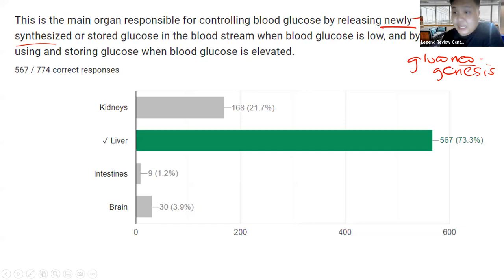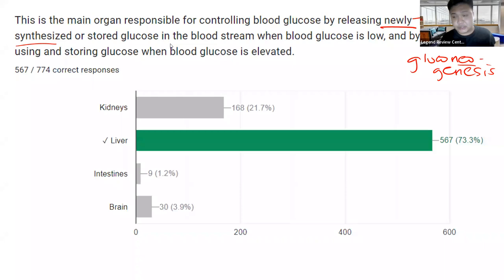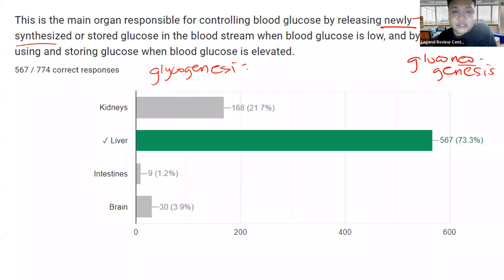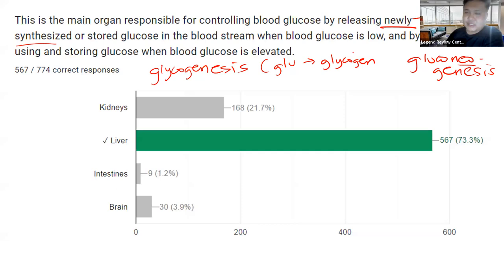The keyword in gluconeogenesis is 'neo' — new, bago. The definition often tested in board exams is: synthesis of new glucose molecules from non-carbohydrate sources. You also have stored glucose. One storage for glucose is glycogen, and the process by which you create glycogen — or store glucose as glycogen — is glycogenesis. So in glycogenesis, glucose is converted to glycogen, particularly in the liver and in your muscles. This is what happens when blood glucose is elevated.